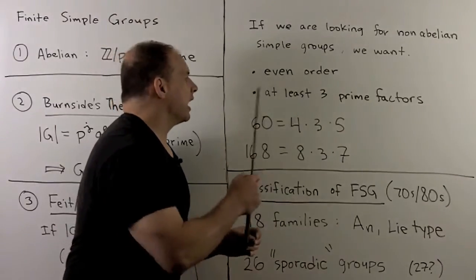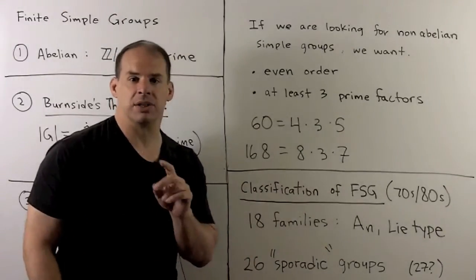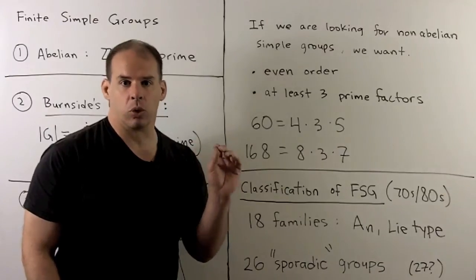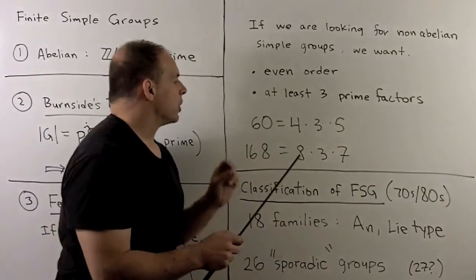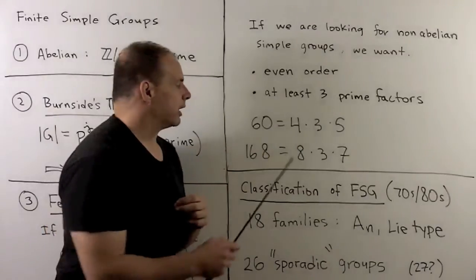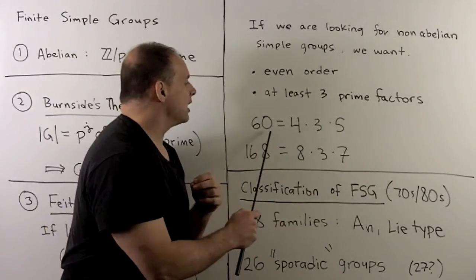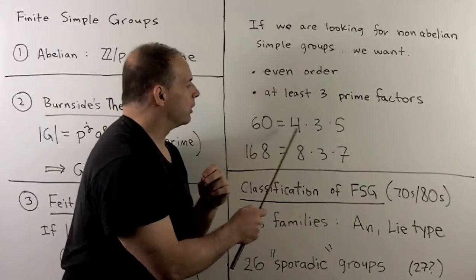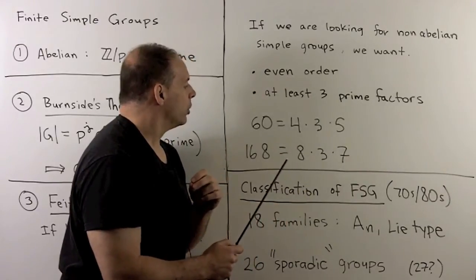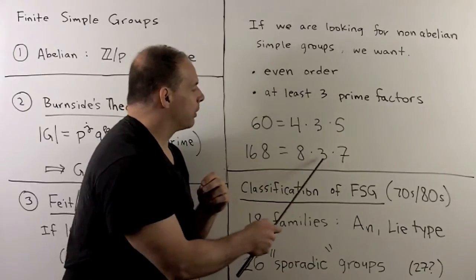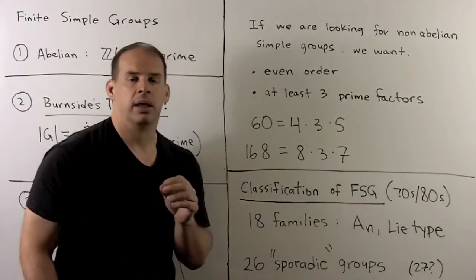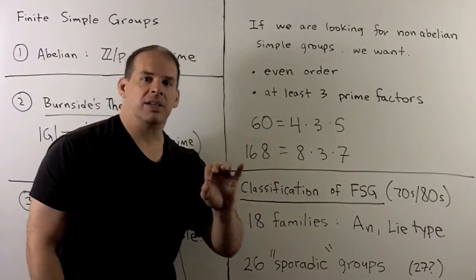So the smallest candidate that we could have for a finite simple group that's not abelian is 30. But Sylow theory will rule that out. So if we go up one more, multiply by two, we get 60. And there we find A5. So note three prime factors and even. For 168, we have three prime factors and even also.